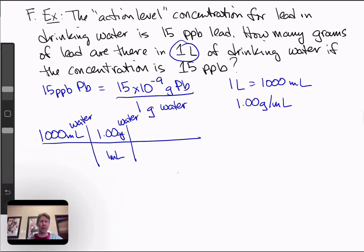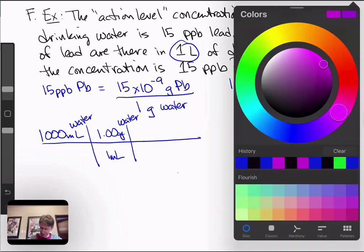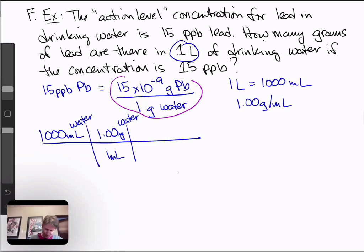And then what we have right here becomes a unit conversion factor for us, which allows our grams of water in the denominator to cancel. And now I just have to write the other part of this, 15 times 10 to the minus 9 grams of lead.